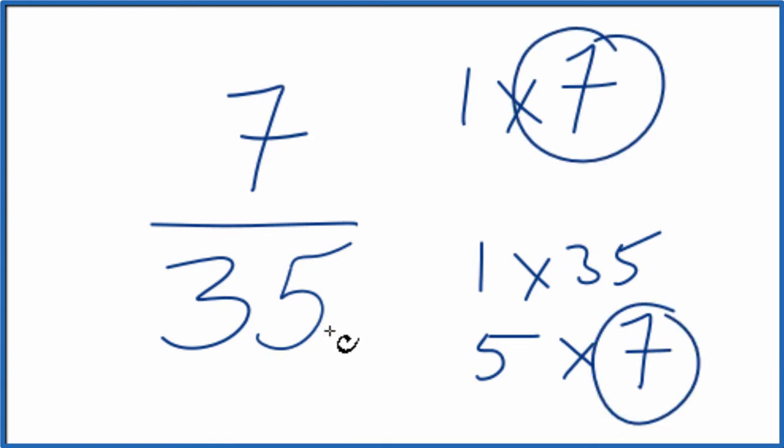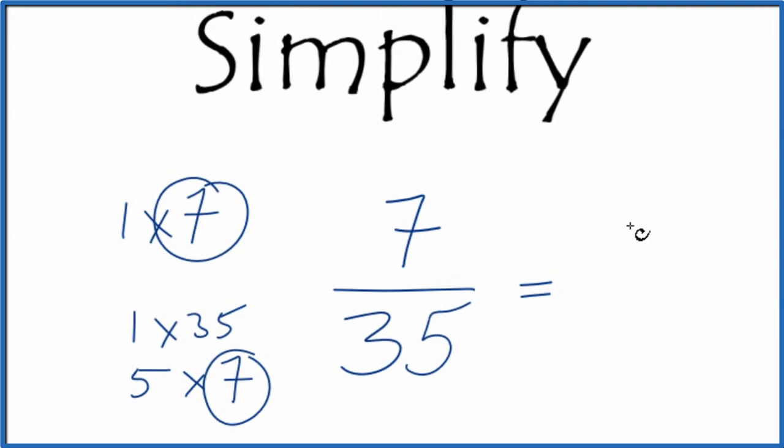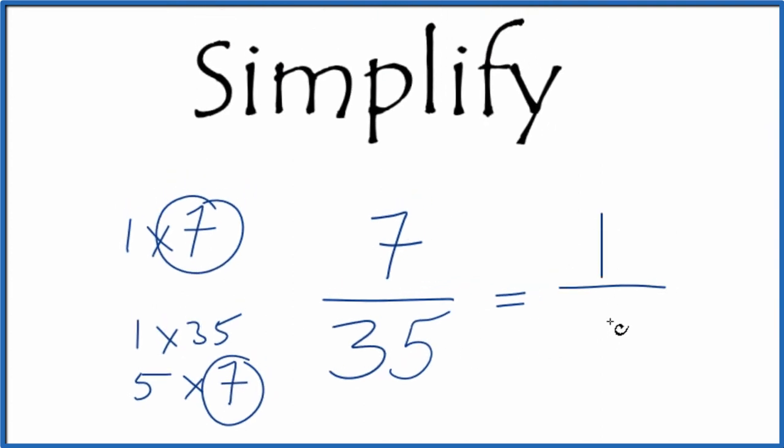So we could divide 7 by 7 and 35 by 7, and we'll simplify the fraction 7/35. Let's move these over here. So 7 divided by 7, that's 1. 35 divided by 7 is 5. So we've simplified 7/35 or reduced it down to 1/5.